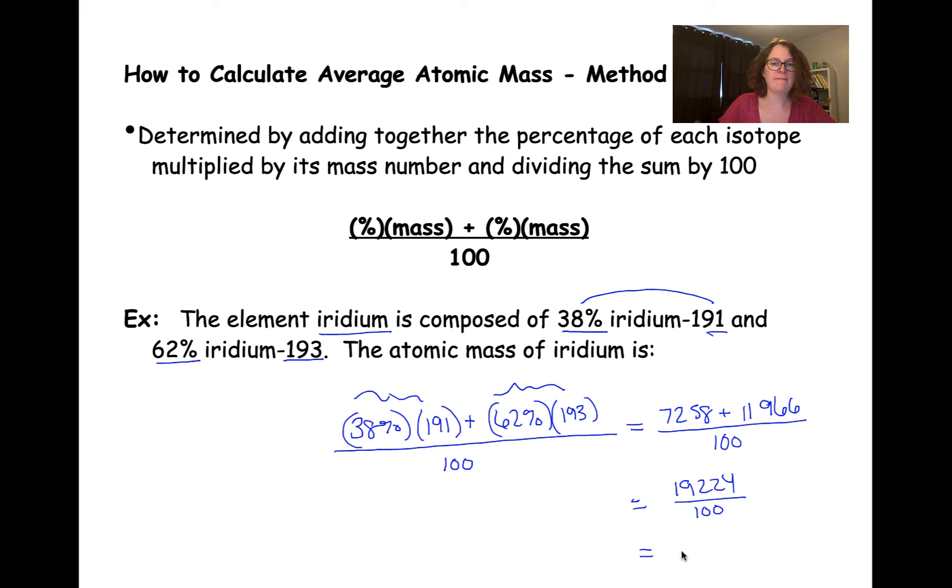So I'm going to do 19,224 divided by 100. And when I do that final calculation, I get 192.24. And that's my final atomic mass, or average atomic mass.